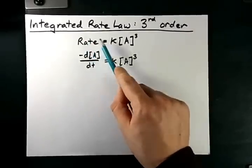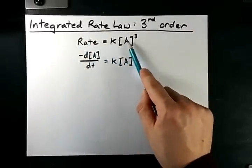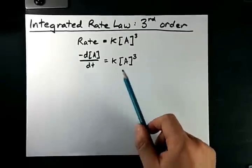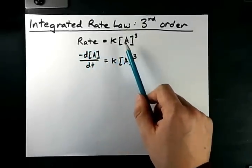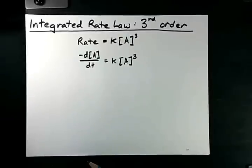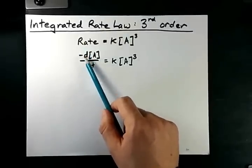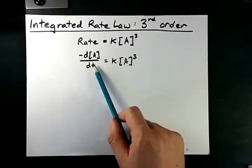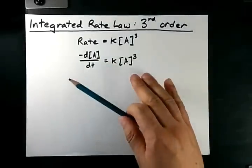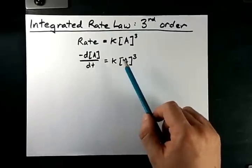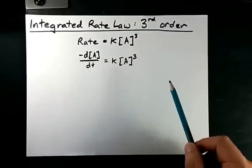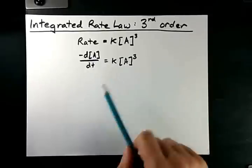If the rate of a reaction is proportional to the cube of a reactant's concentration, then the rate equals k times that concentration cubed. The rate is defined as the rate of loss over time of that same reactant. The way we're going to solve for the concentration at any time is to integrate this.